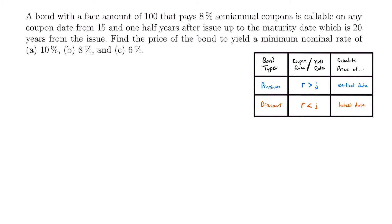Welcome back. Let's start with this example. We have a bond with a face amount of 100 that pays 8% semi-annual coupons, and is callable on any coupon date from 15 and a half years after issue up to the maturity date, which is 20 years from the issue. We need to find the price of the bond to yield a minimum nominal rate of 10%, 8%, and 6%, so we'll be calculating three different prices for this callable bond.